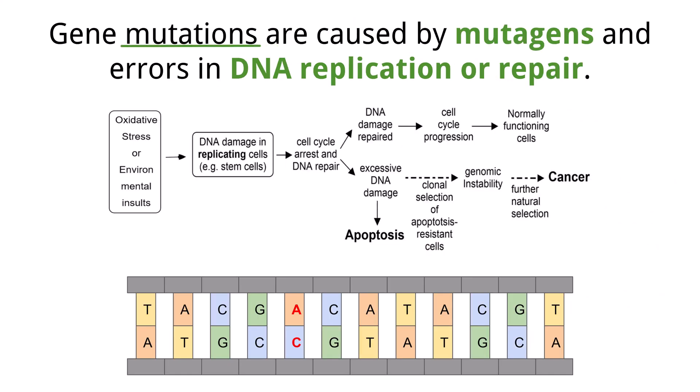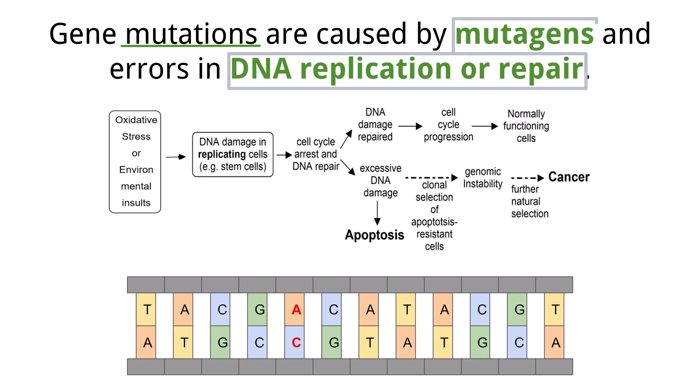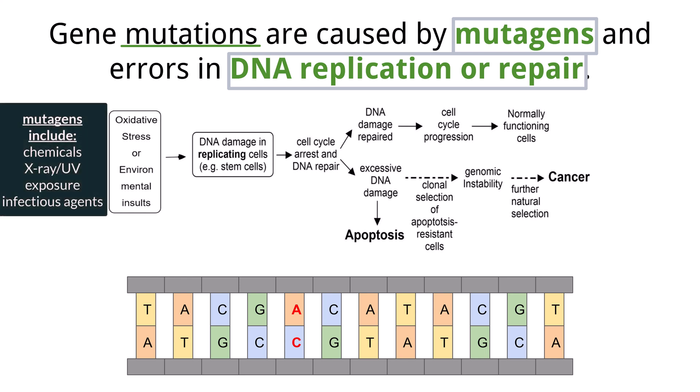Mutations can occur for a variety of reasons. Some happen spontaneously during DNA replication or repair. Others are triggered by environmental agents called mutagens. These include chemicals, exposure to radiation like x-rays and UV light, and infectious agents. UV radiation from sunlight and x-ray exposure can directly damage DNA, causing breaks and distorting the DNA helix, which can lead to cancer. Chemicals found in cigarette smoke are known to cause point mutations and inhibit DNA repair, which can also increase the risk of cancer, such as lung cancer.